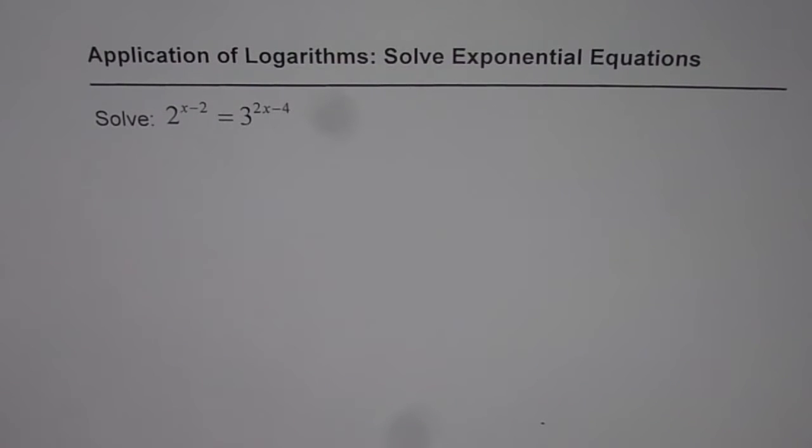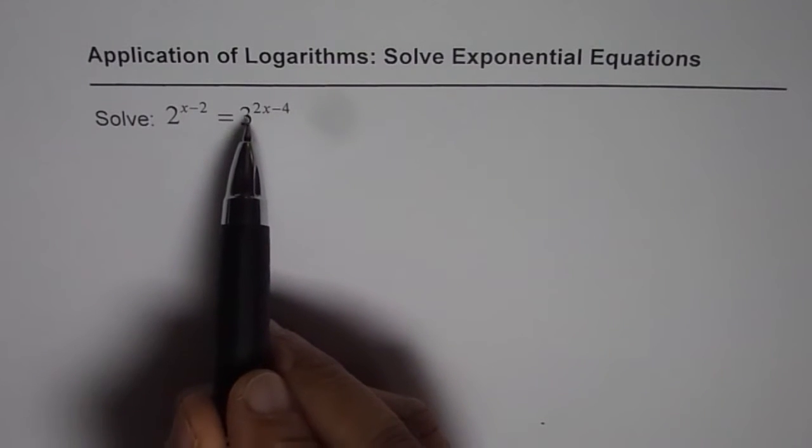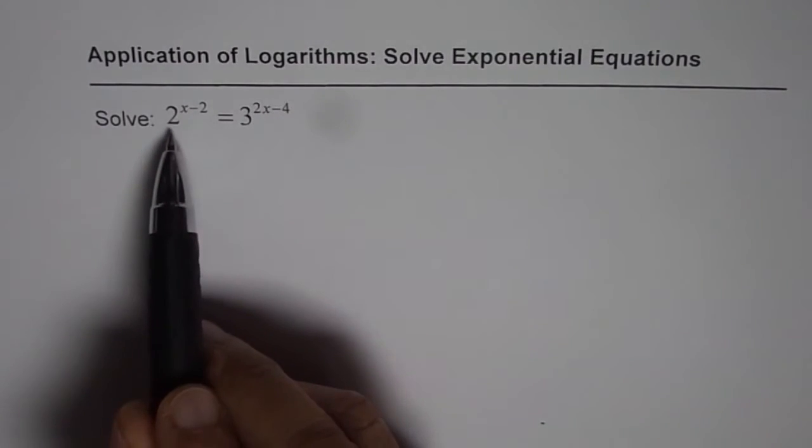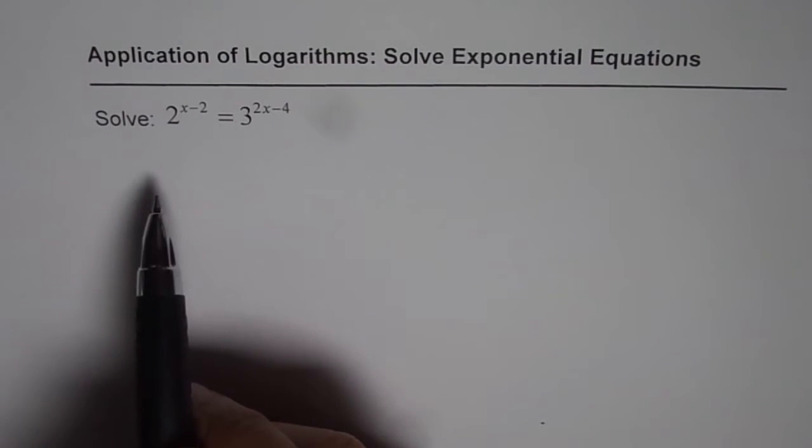So the question here is 2 to the power of x minus 2 equals 3 to the power of 2x minus 4. The base is 2 on the left side and 3 on the right side. So in such cases logarithms can be used.